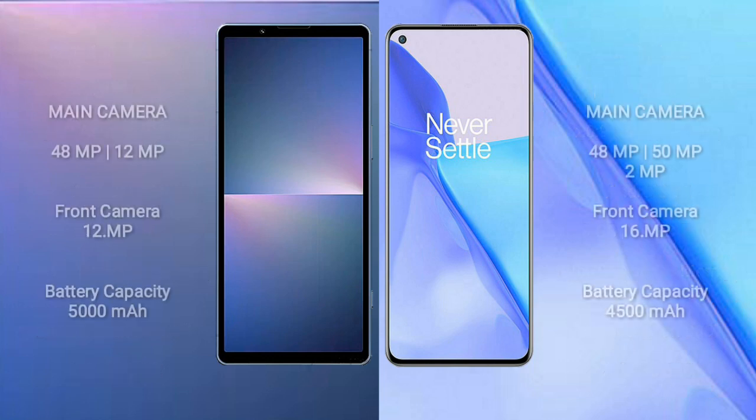Sony Xperia 5 Mark 5 has a rear dual camera setup of 12-megapixels plus 12-megapixels, and a front camera of 12-megapixels. OnePlus 9 has a rear triple camera setup of 48-megapixels plus 50-megapixels plus 2-megapixels, and a front camera of 16-megapixels.